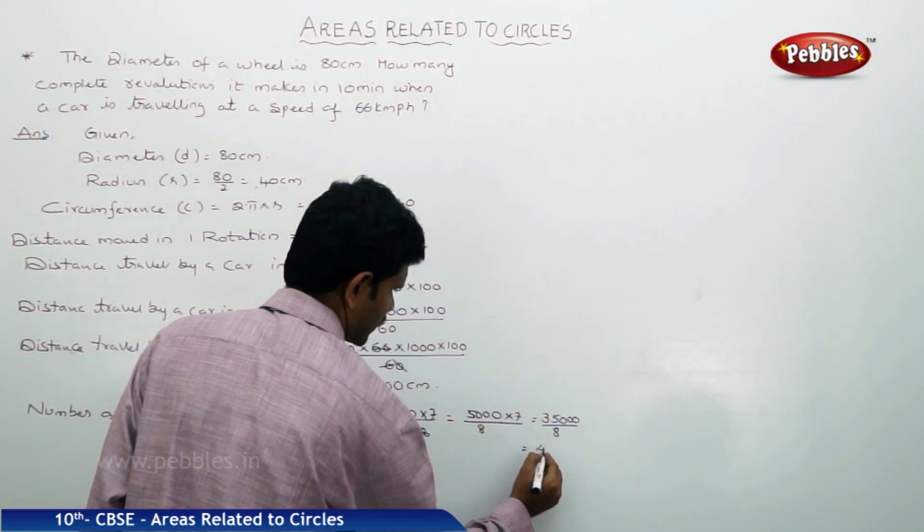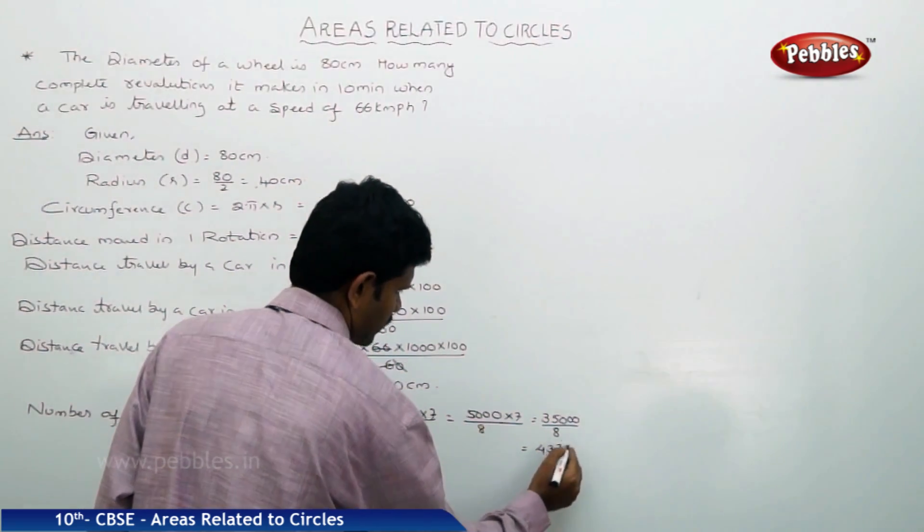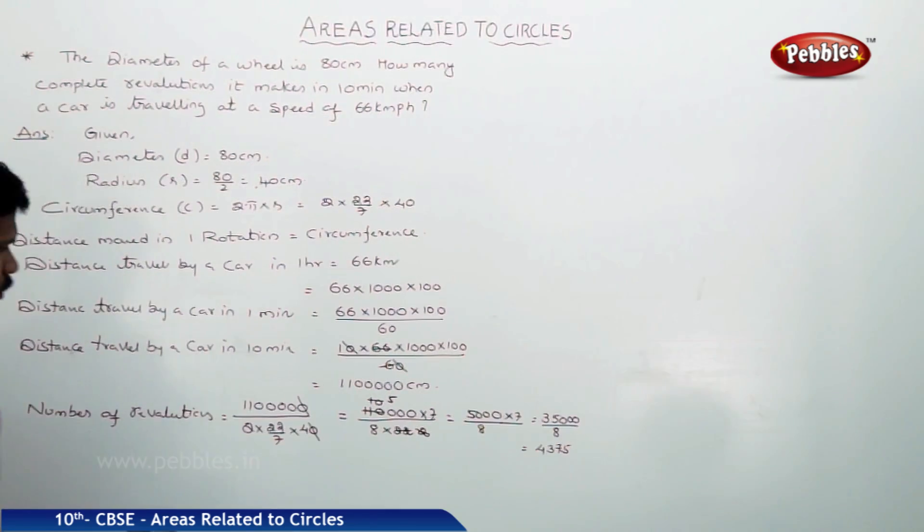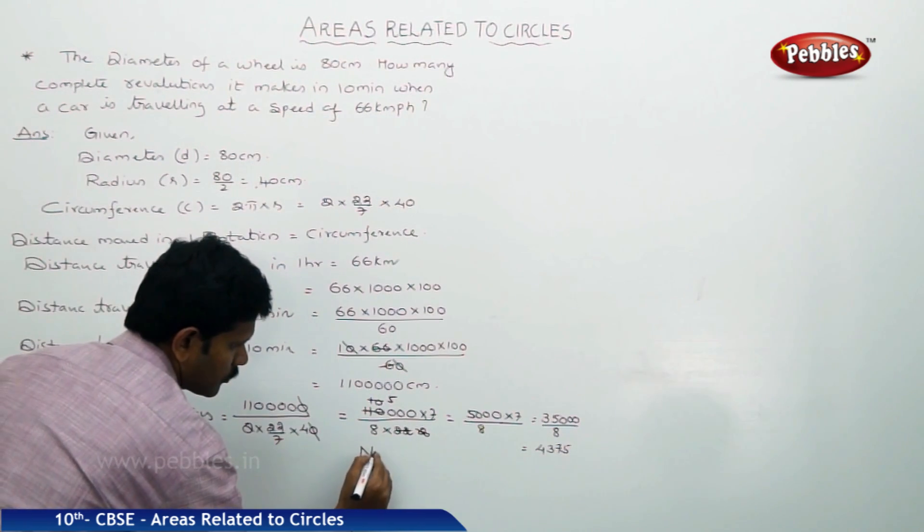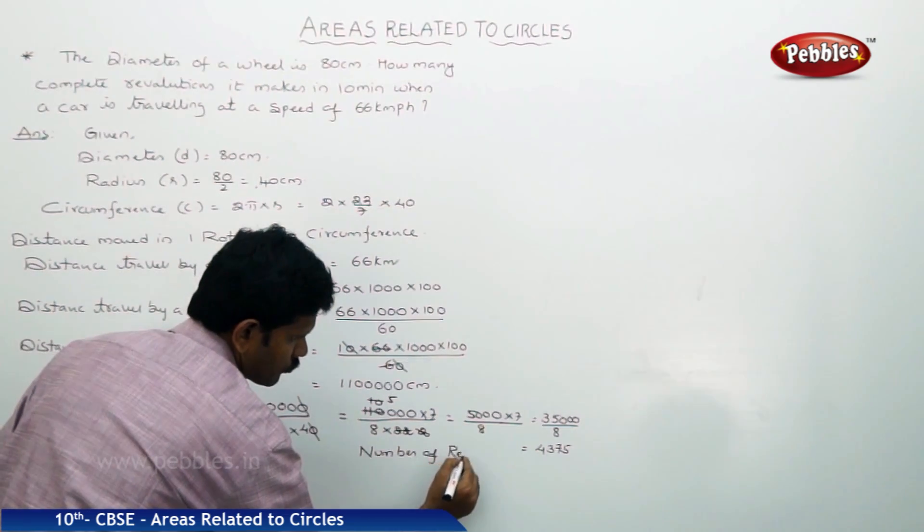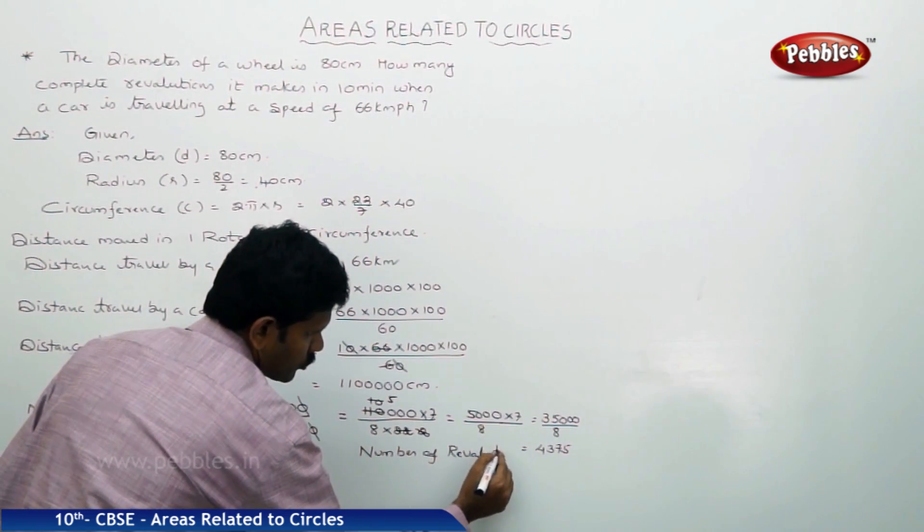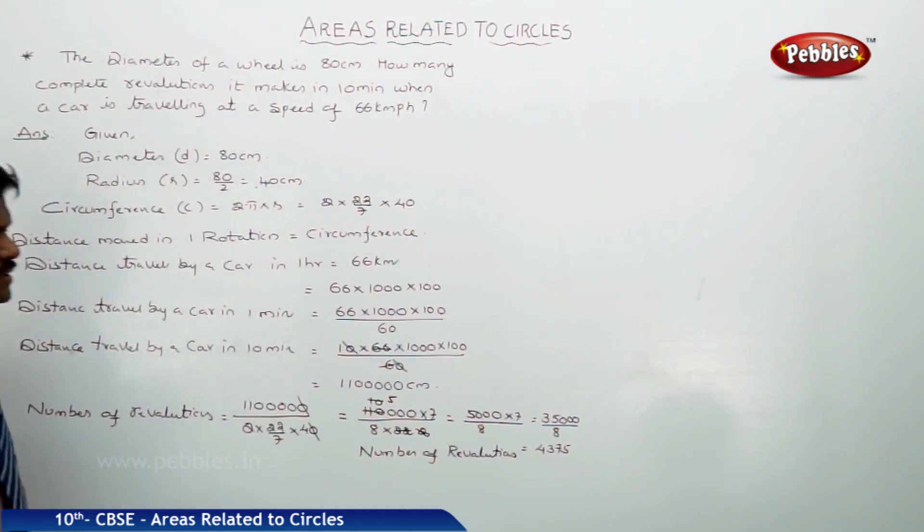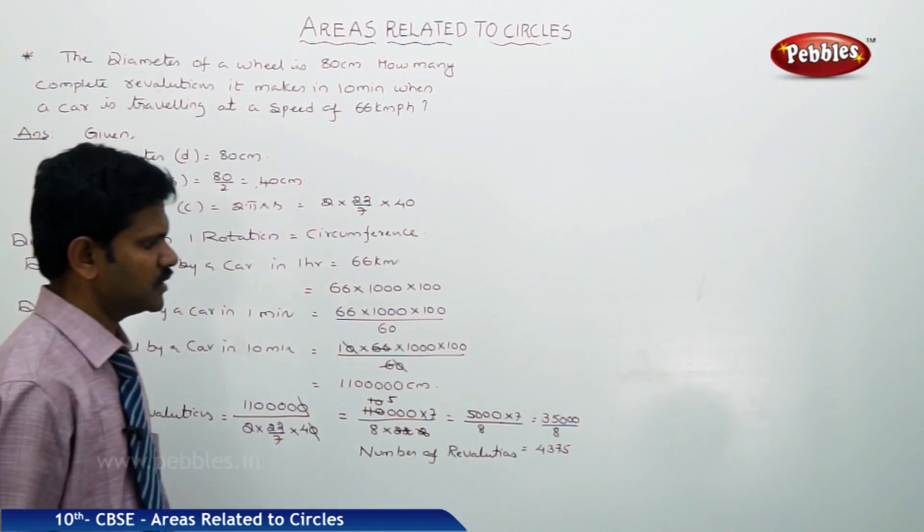If you simplify, you will get 4, 3, 7, 5. Therefore, number of revolutions is 4,375.